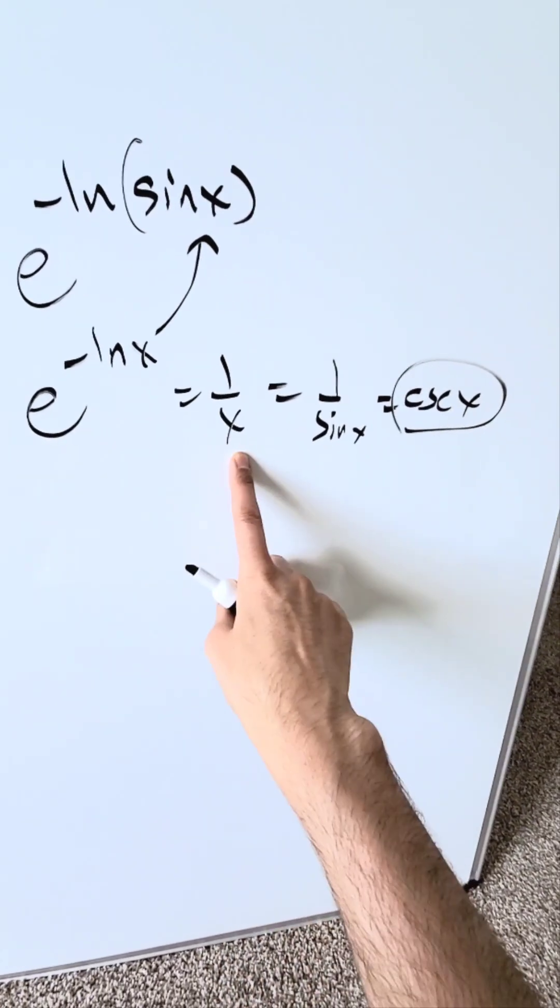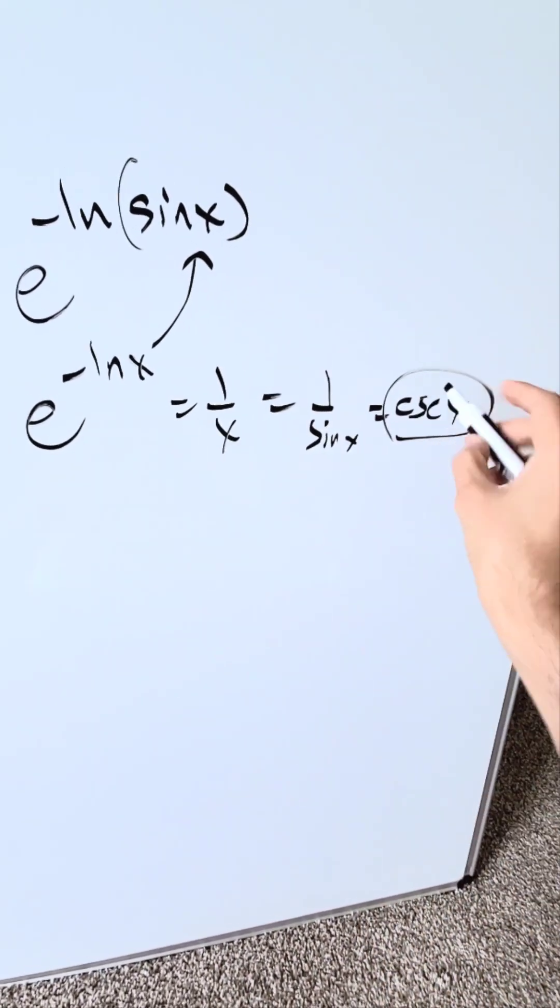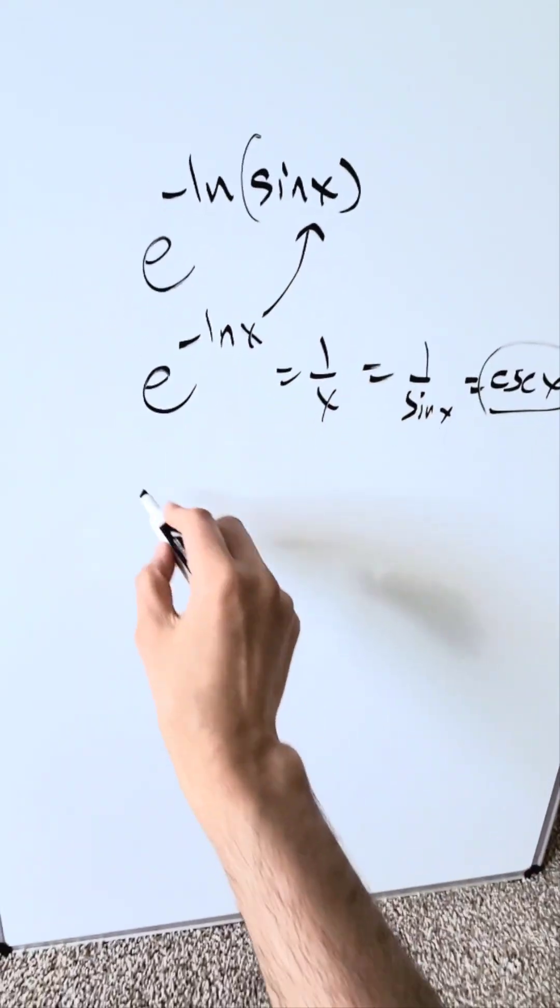But for those of you who don't know this identity, how would you have normally worked this out and still arrive at the right answer? Then you do the long way.